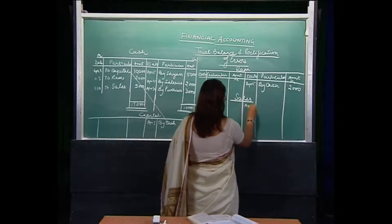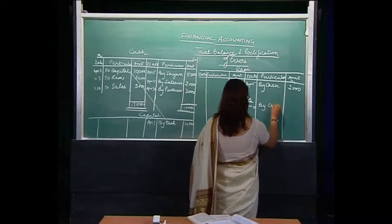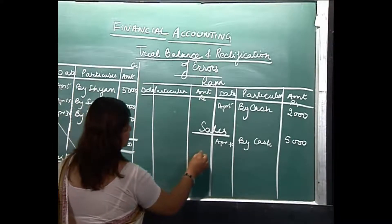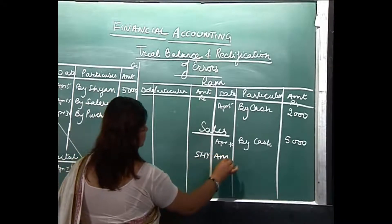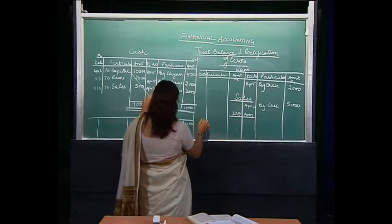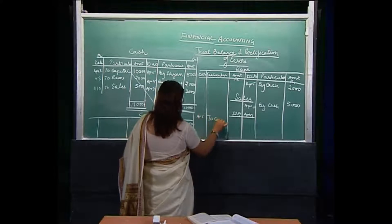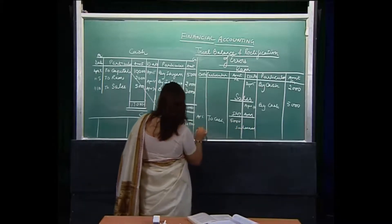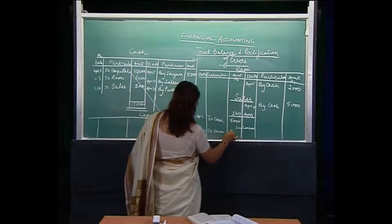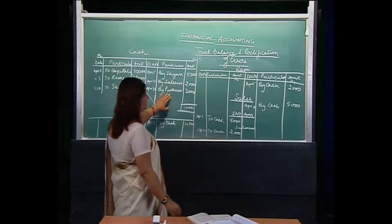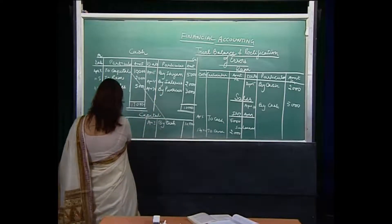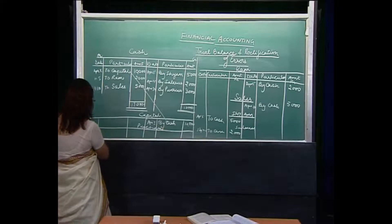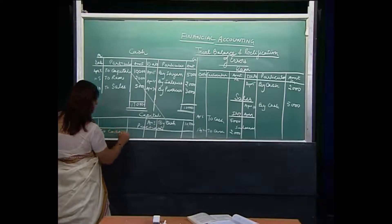Now these entries are completed on the debit side. We are going to post the credit side — SHAM's account would be opened first, and this posting shall be made on the reverse side — that is, on April 5, to cash, as cash is being paid off. Similarly, salaries on April 15 to cash 2,000. And we are going to open the purchases account as purchases to cash — it will be April 30 to cash 3,000.